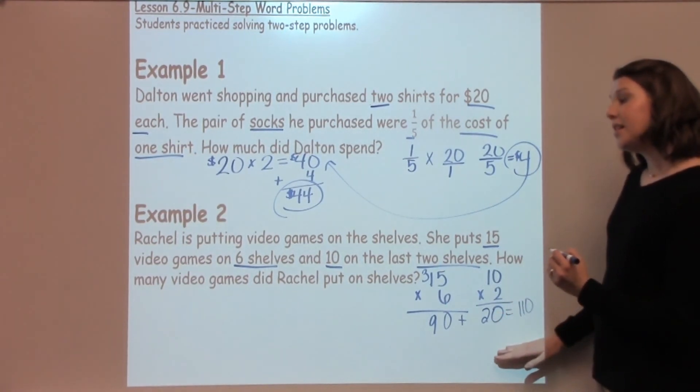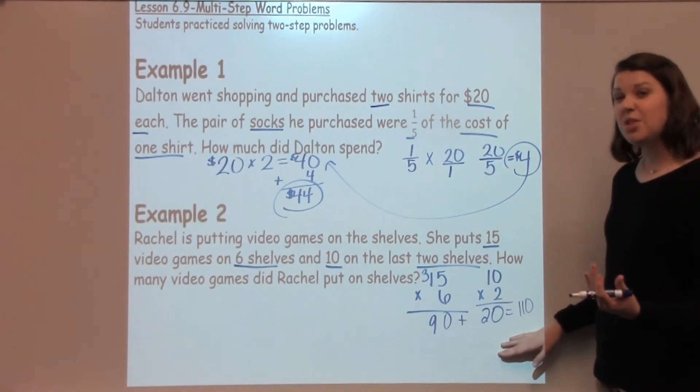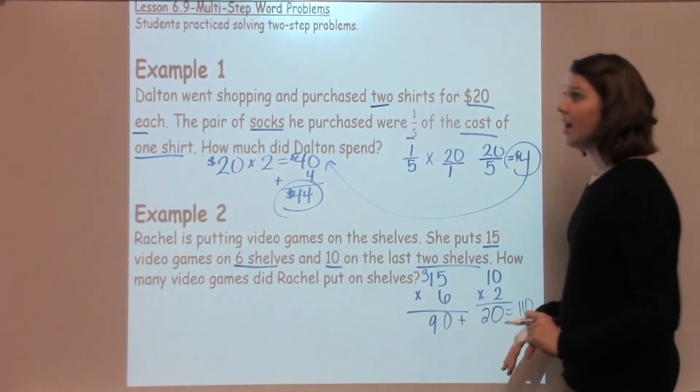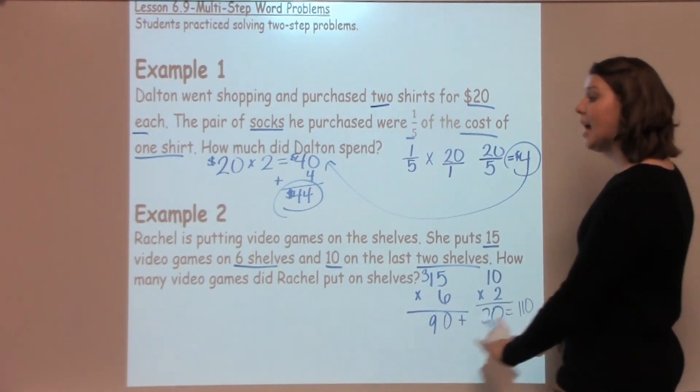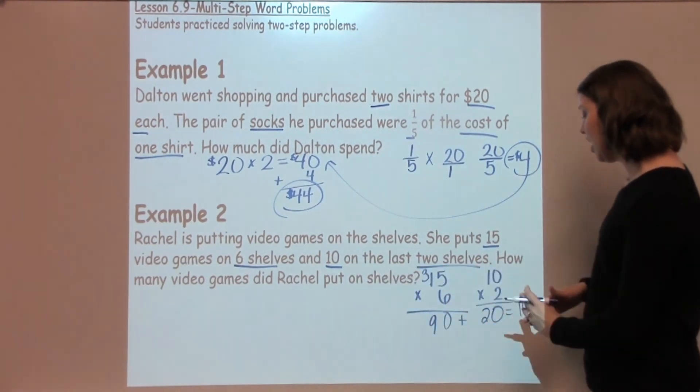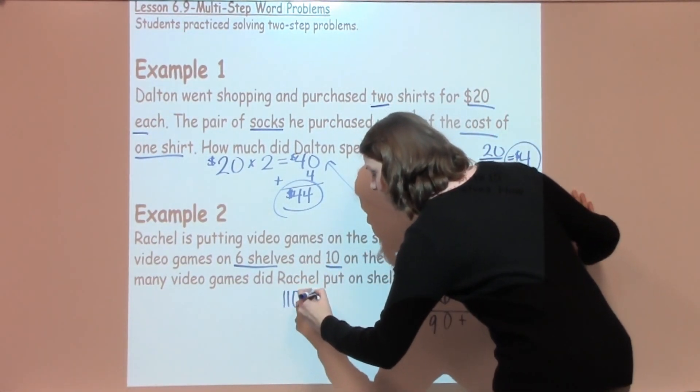Now, the important thing to think about here is what is my label going to be? So, I've got 110. Some students just automatically go to the last word and say 110 shelves. Well, in this case, we need to reread the question. It says, how many video games did Rachel put on the shelves? So, I would need to write 110 video games.